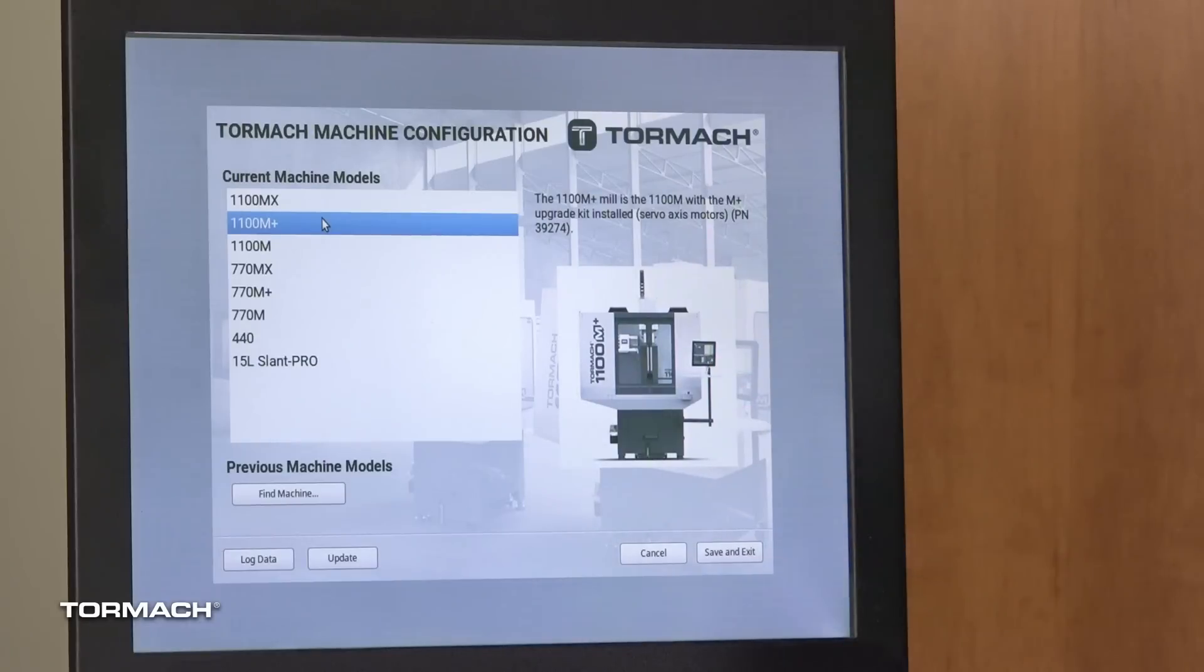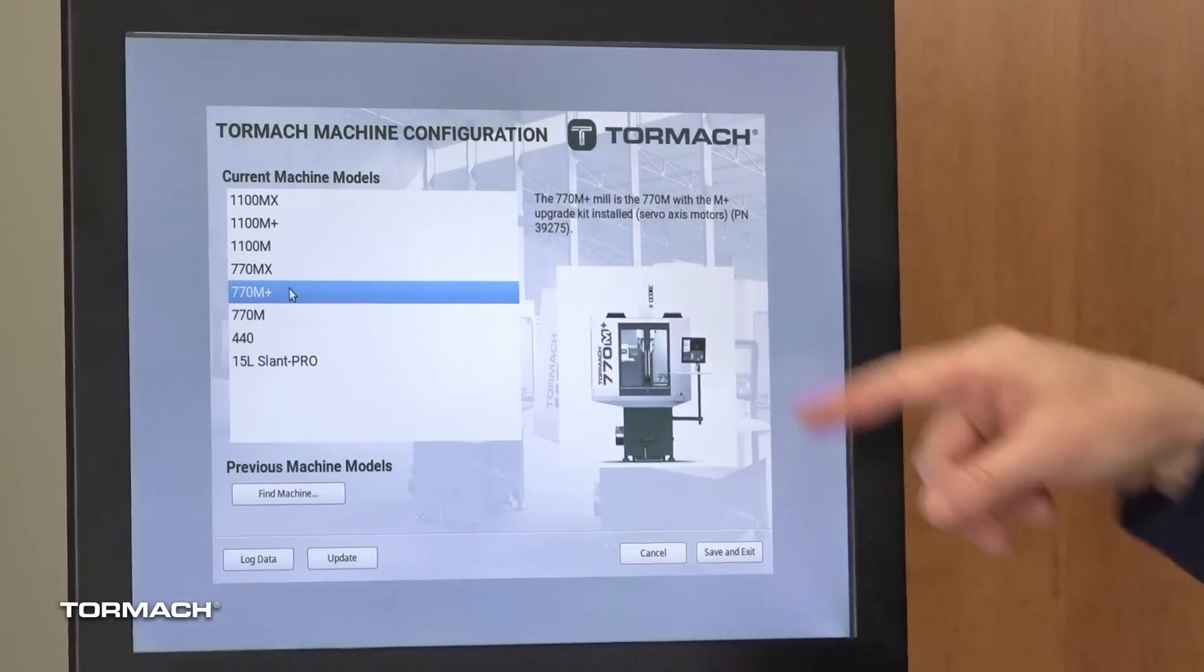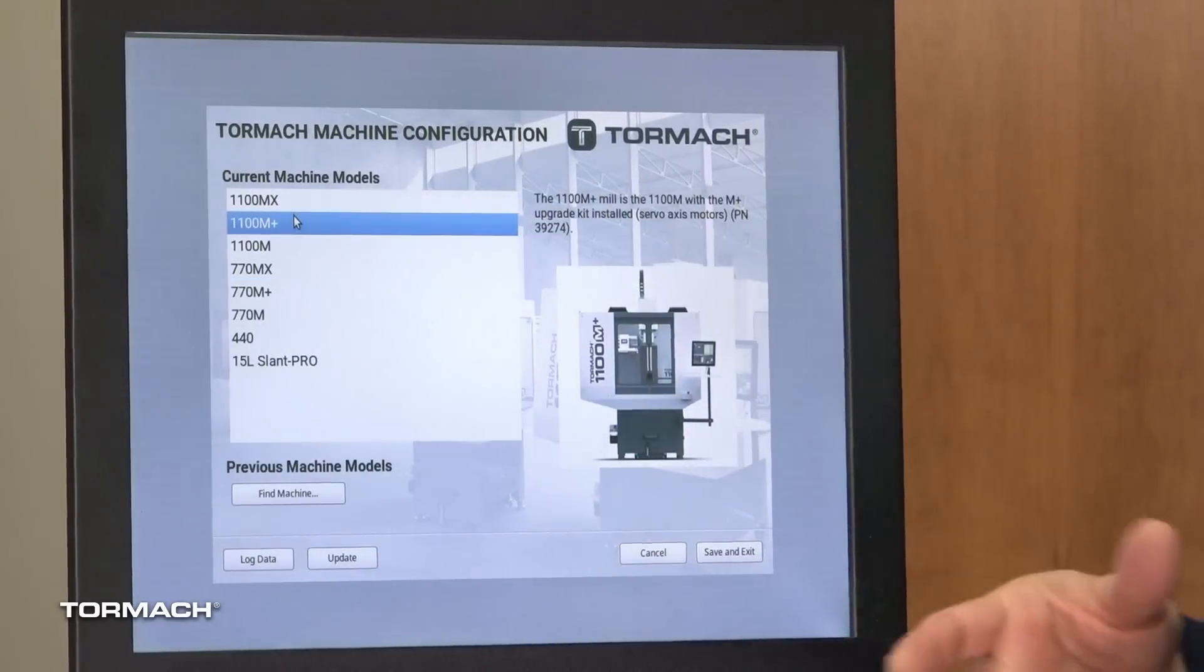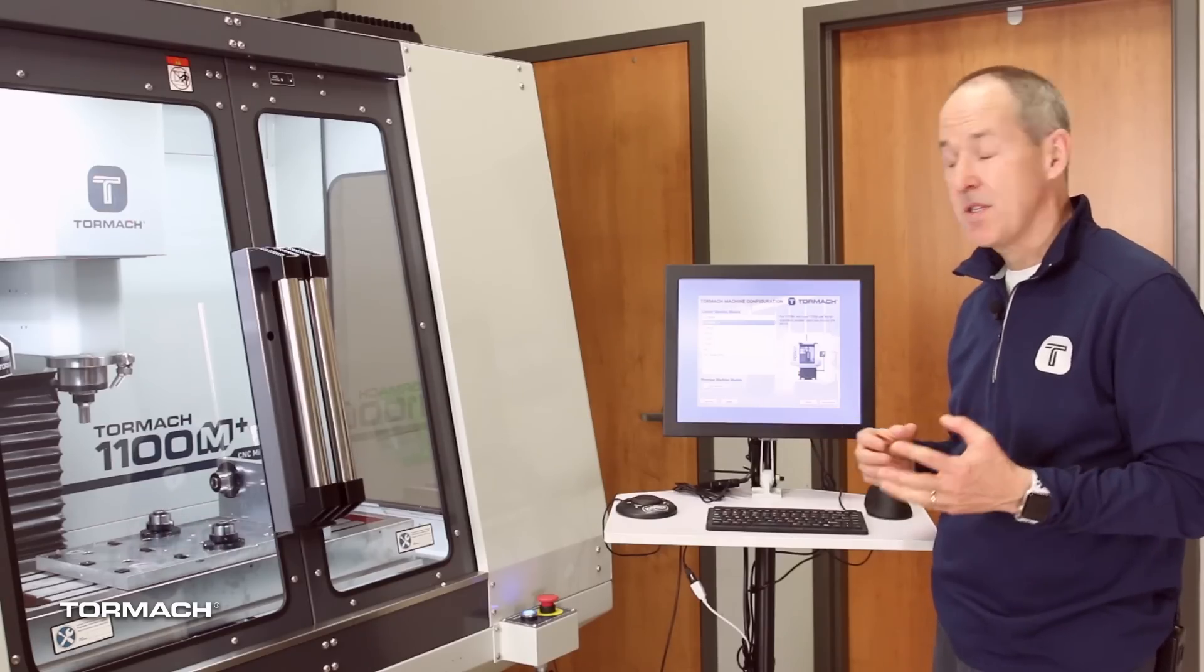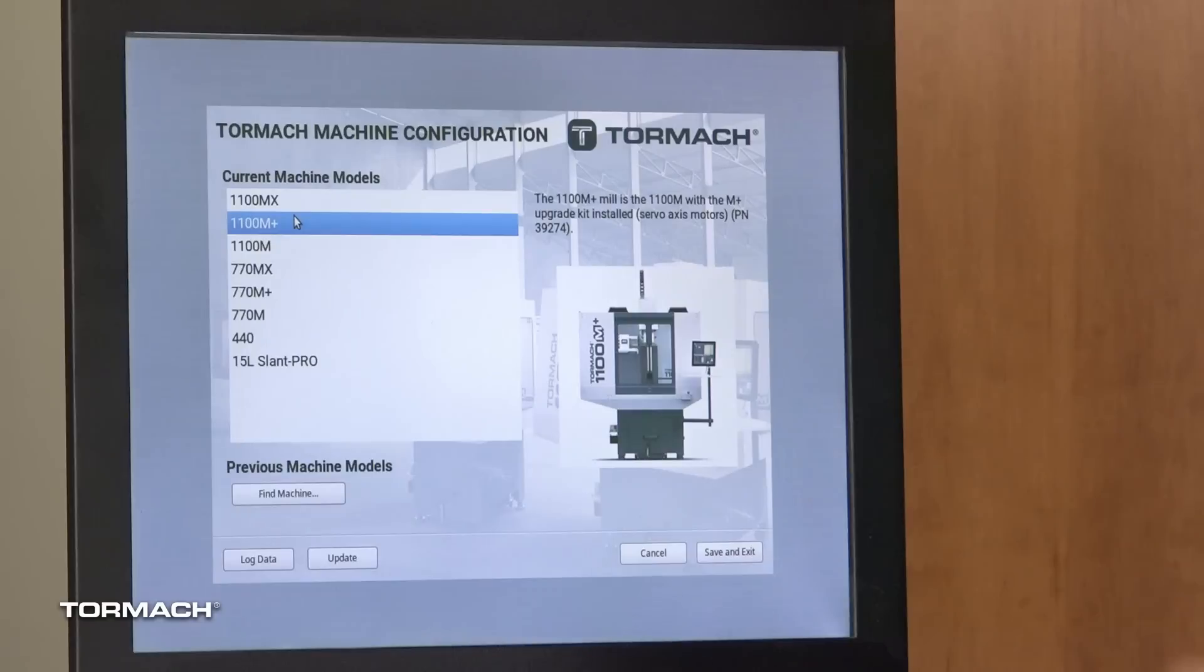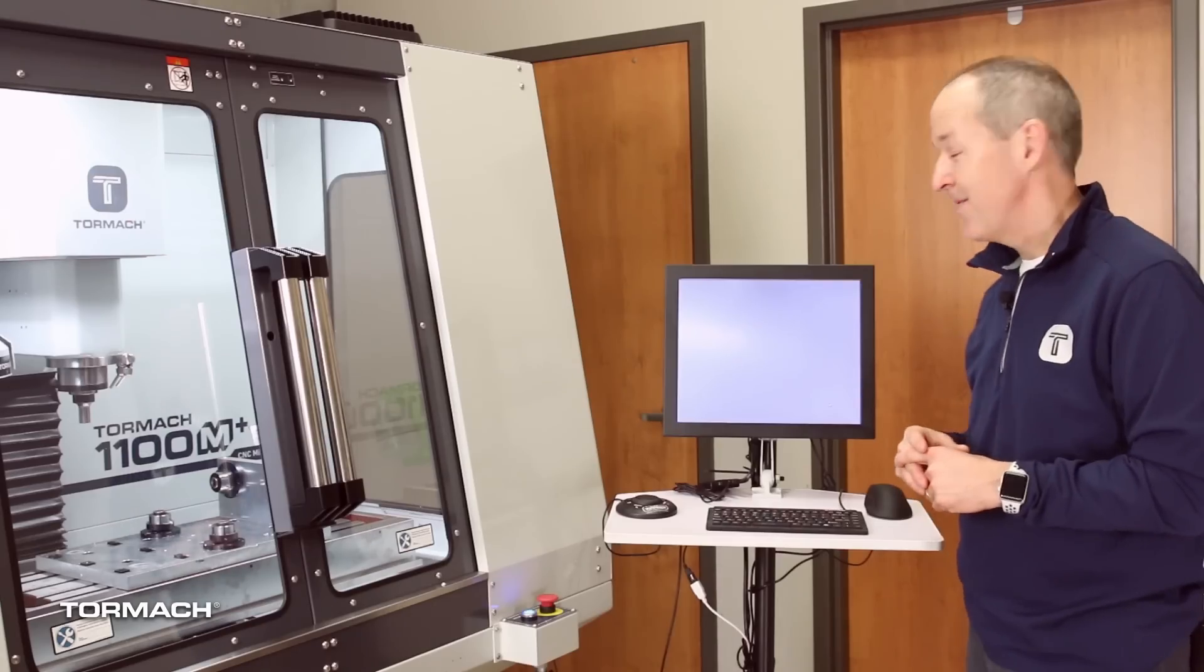Right away we wanted to start by showcasing the new support for the 1100M Plus and the 770M Plus. In the newer config chooser you can see there's actually two new choices. These are the M models that have the servo upgrades for faster rapids installed. So this is an 1100M Plus, so we're going to pick that and launch PathPilot and show you the rest of the video.